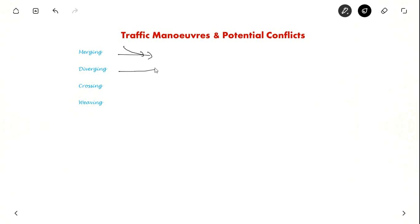And diverging, when a vehicle goes straight, another vehicle will diverge from its path and go away. That is diverging. Crossing is nothing but crossing head to head. This is crossing.